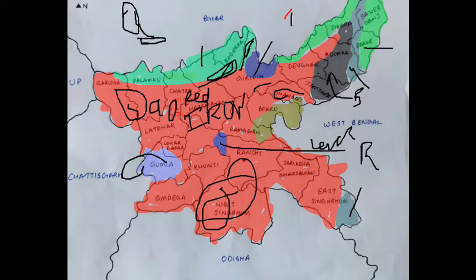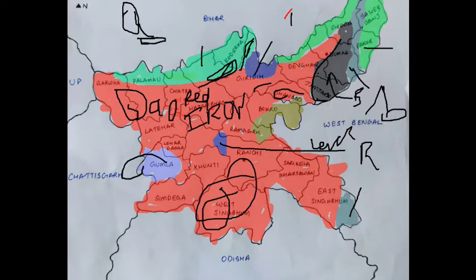Black soil is highly retentive due to the high portion of clay present. Uplands have low fertility — the fertility of the upper portion is low as compared to the lower portion. So upland areas are less fertile and lowland areas are more fertile.